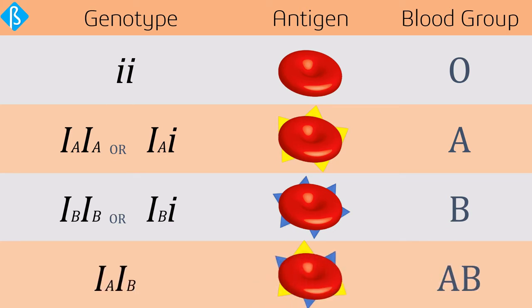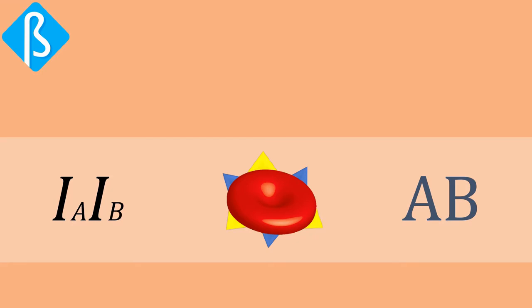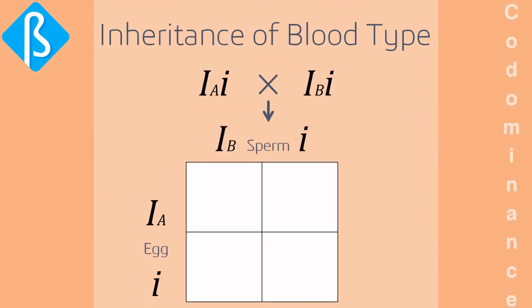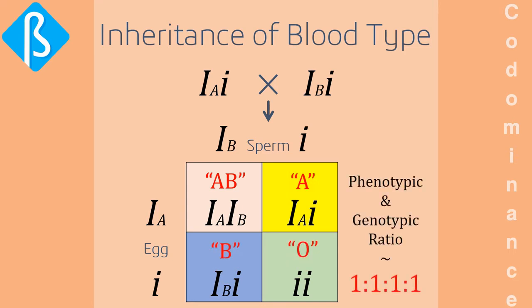But when both Iᴬ and Iᴮ alleles are present, the blood group is AB, because both alleles contribute independently and equally. This phenomenon in which both alleles are expressed in a heterozygous individual is called co-dominance. To understand inheritance of blood type, consider a cross between parents with Iᴬ i and Iᴮ i alleles — the four possible offspring have blood groups A, B, AB, and O in a 1:1:1:1 ratio, different from Mendelian results.